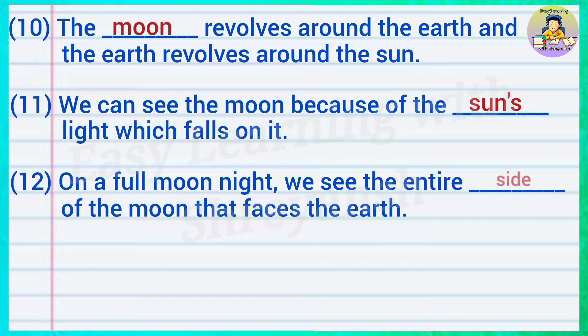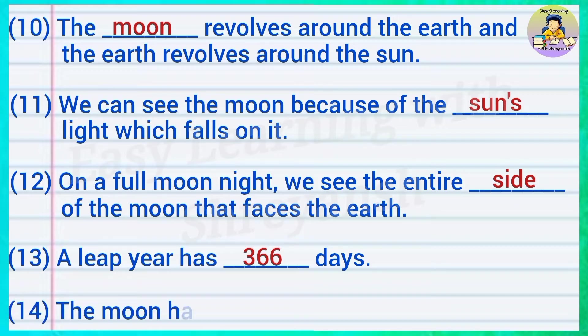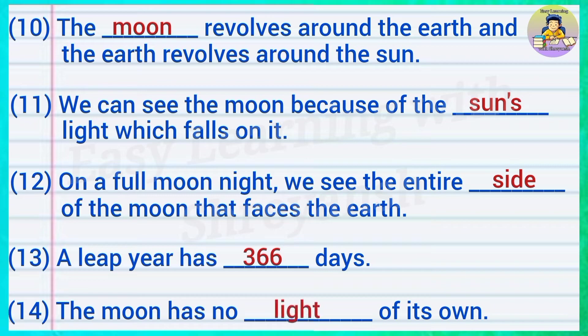Twelve — on a full moon night we see the entire — of the moon that faces the earth — answer: side. Thirteen — a leap year has — days — answer: 366. Fourteen — the moon has no — of its own — answer: light.